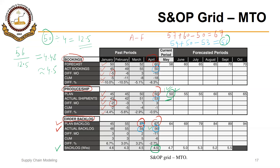This is how different calculations are made for an S&OP grid for a make-to-order production environment. Keep in mind that these grids are dynamic in nature — they keep on updating. Once the month of January ends, the grid will move one month forward and we will make similar calculations for May and so on. So this keeps on updating with the passage of time. I hope this grid is clear. Thank you very much.